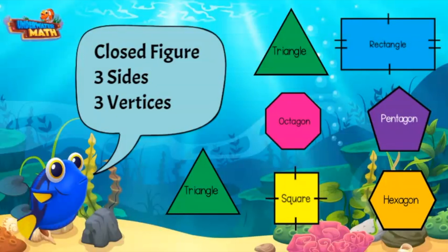I count the sides. There are one, two, three. Then I count the vertices. There are one, two, three. The shape I am thinking of is a triangle.